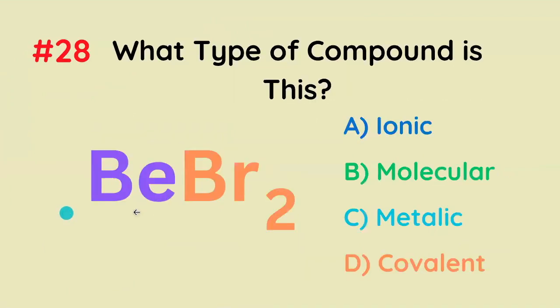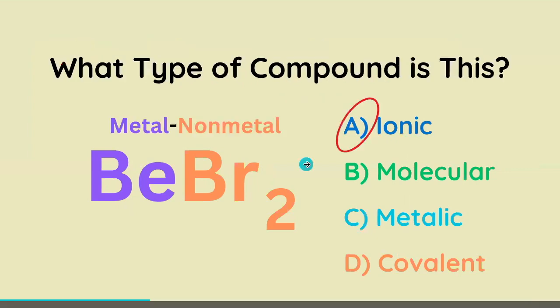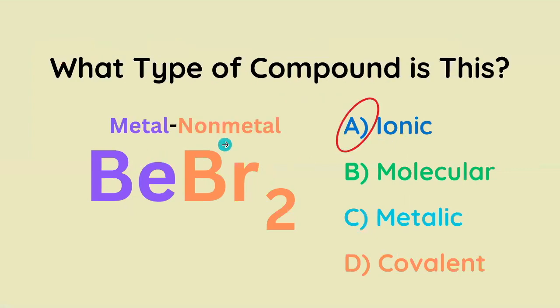What type of compound is BeBr₂? Ionic, molecular, metallic, or covalent? It's going to be ionic, because it's composed of a metal and a nonmetal.